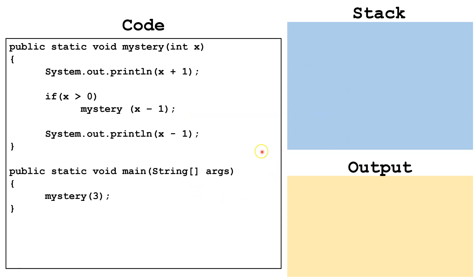Now we'll look at a final program where we use both previous techniques — some processing before the recursive call and also some processing after it. The code before the recursive call executes as soon as the method is called, whereas the code after the recursive call won't execute until we're moving back down the stack. As an exercise, try tracing this problem out yourself. To see the entire Java curriculum, click on the playlist in the lower right-hand corner. To see the compressed 'Learn Java in 3 Hours' tutorial, click on the video link in the lower left-hand corner. If you have any questions, comments, or feedback, please leave comments below.